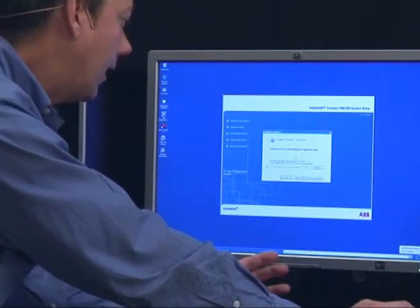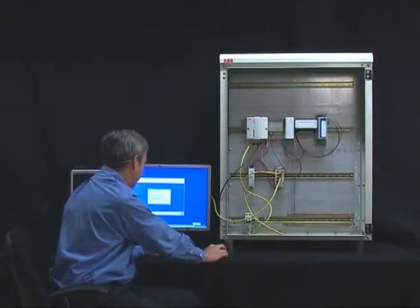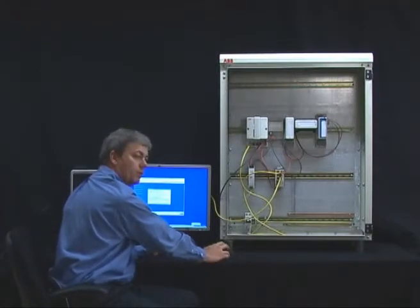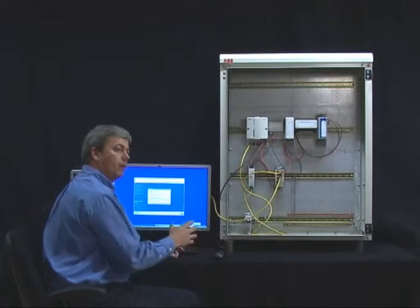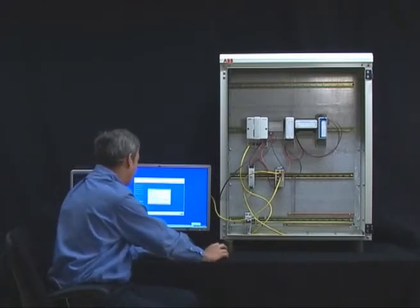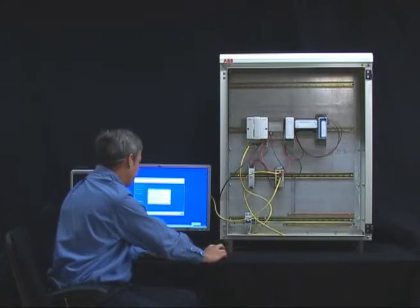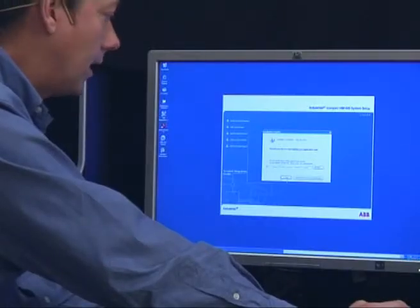The compact HMI is always delivered with a license file for demonstration purposes. So we can use that one or we can browse to another file that we have got with our delivery of the compact HMI. In this case, we will run with the demo version, so we just click yes here.